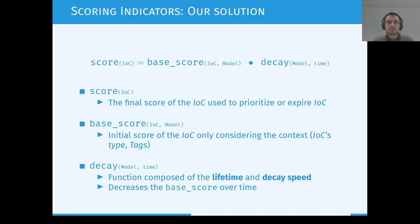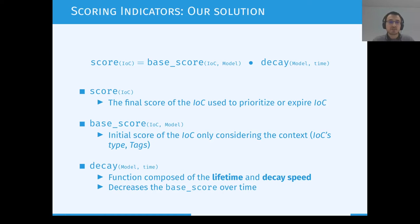This is a very high-level formula of our solution on how to decay and score IOCs. To score IOCs, we take two components into account. The first is the base score, which is the initial score of the IOC considering only its context — for example, the type: is it an IP address, a file, a hash? But also all the tags and taxonomies attached to this IOC. The second component is the decay, which is basically a function composed of a lifetime and a decay speed, and this function simply decreases the base score over time.